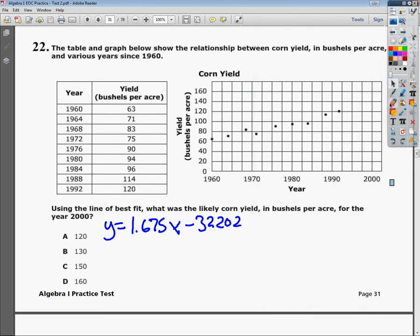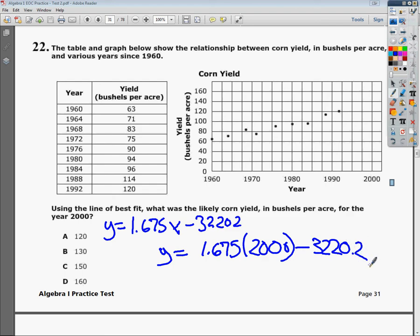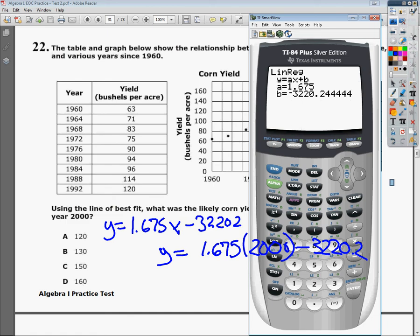So what I'm going to do from here is move this out of the way, and then I'm just going to plug in an x value. My x value, of course, is the year 2000. So y equals 1.675 times 2000 minus 3220.2. I'm going to bring the calculator back up for a second—I brought it down so I could write. Now I need to see it again.